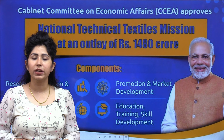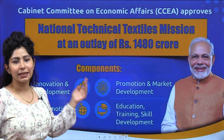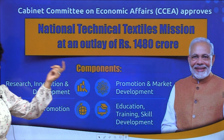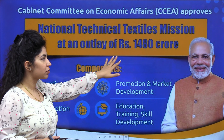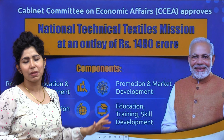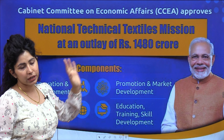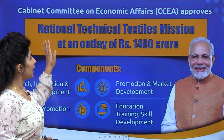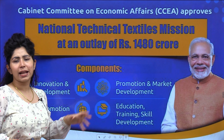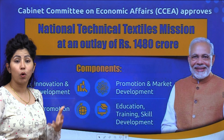Therefore, the Cabinet Committee on Economic Affairs approved a National Technical Textiles Mission in 2021. The budget outlay was relatively small — just rupees 1480 crore — but that was a good amount to start a scheme. This mission has four components: research and development; promotion and market development; export promotion; and education, training and skill development.